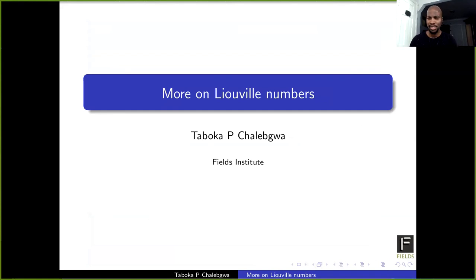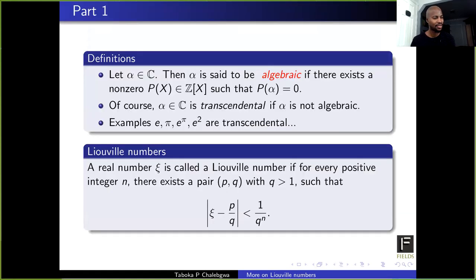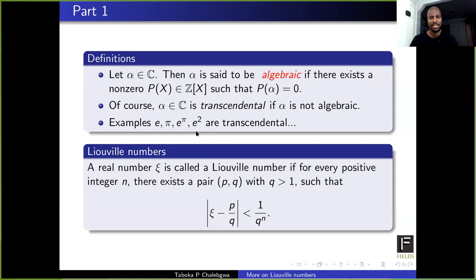So I think our talk today will have two parts, and both parts will be connected by the concept of Liouville numbers. Let's quickly go to the definitions and get on with the talk. Recall that a complex number is algebraic if it is a zero of a polynomial with integer coefficients, and it is transcendental if it is not algebraic. Famous examples of transcendental numbers include e, pi, e to the pi — I believe this is called Gelfond's constant — e squared, etc.